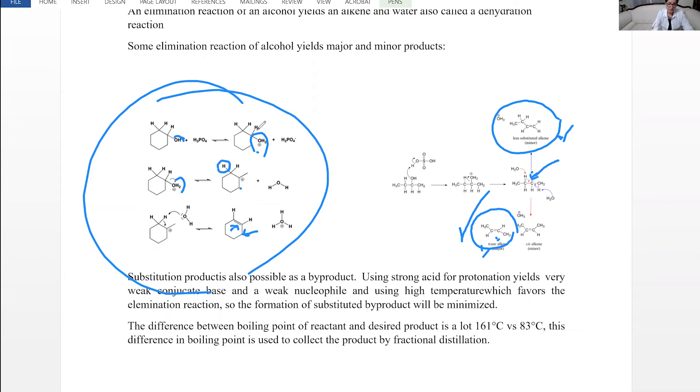The other byproduct or possible byproduct is substitution product. For substitution we need a good nucleophile and also temperature control. If we use high temperature it would favor elimination.